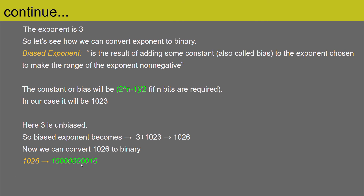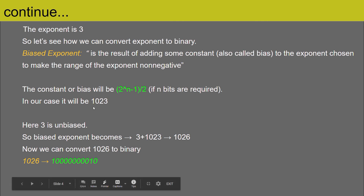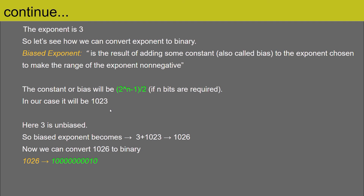Now let's understand why the biased exponent is required. The exponent value can be both positive and negative, but storing an extra sign bit for the exponent would make calculations more complex. To avoid that complexity, it was decided that the exponent would be stored in biased form. The biased value determines the sign: any value greater than 1023 is positive and any value less than 1023 is negative in the unbiased form.